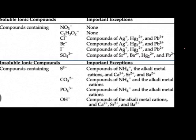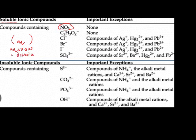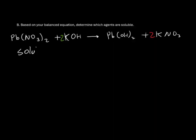Since our first compound was Pb(NO3)2, we'll look for either of those ions inside of our list. Notice the first entry is NO3, and this is in the soluble section. Anything that is in the soluble section will dissolve in water and will be represented with the symbol AQ in parentheses — this stands for aqueous, meaning dissolved in water. Since our NO3 is located in the aqueous section, we will say that Pb(NO3)2 is soluble and place AQ after it. The reason it was soluble is because NO3 negative is always soluble.